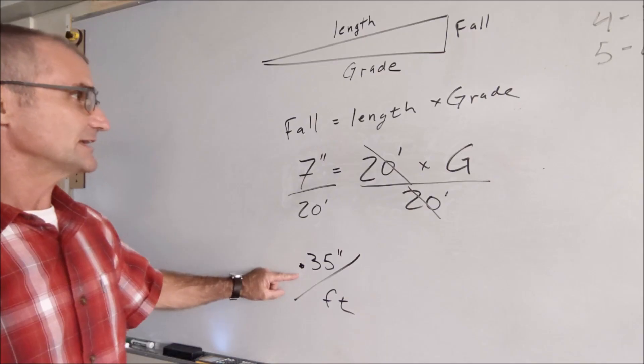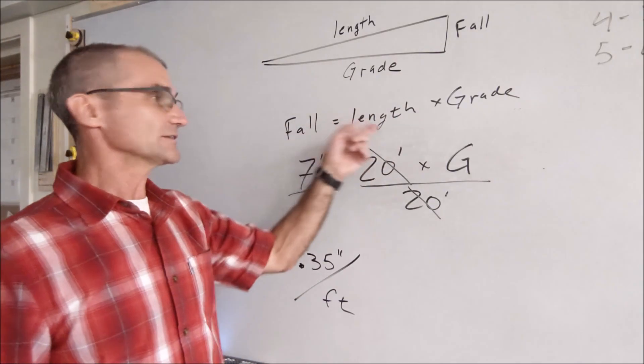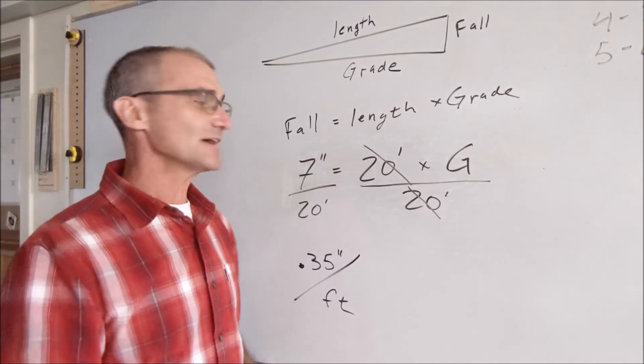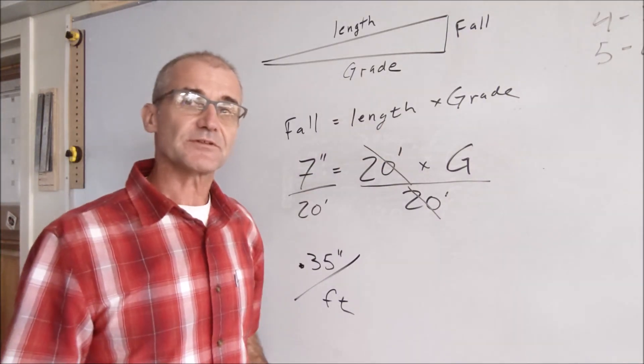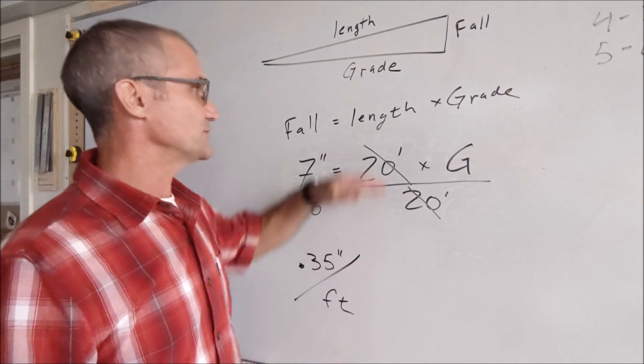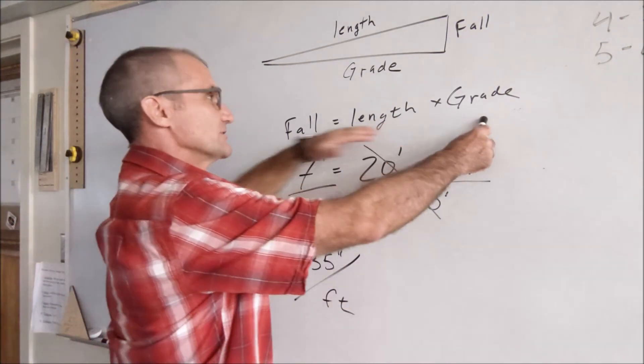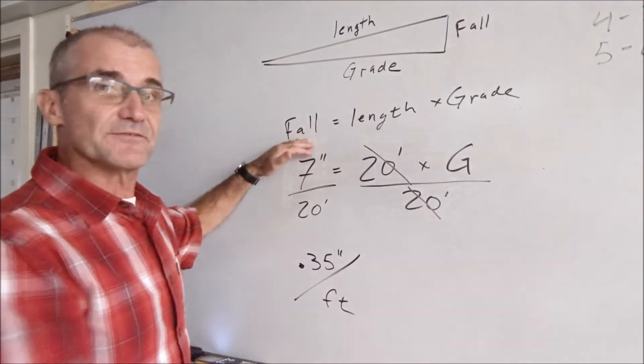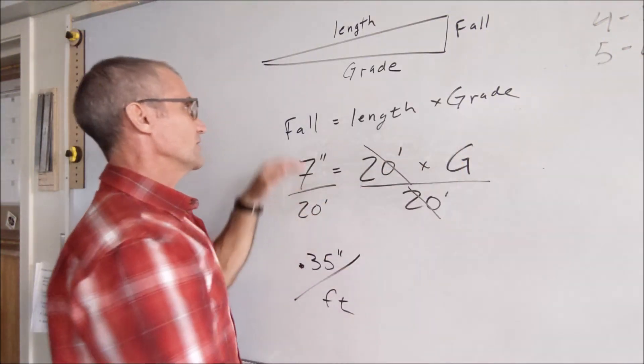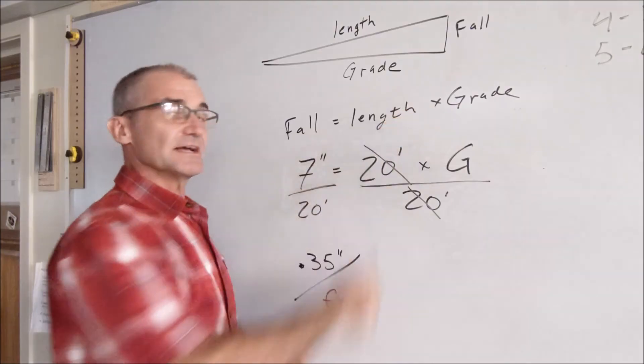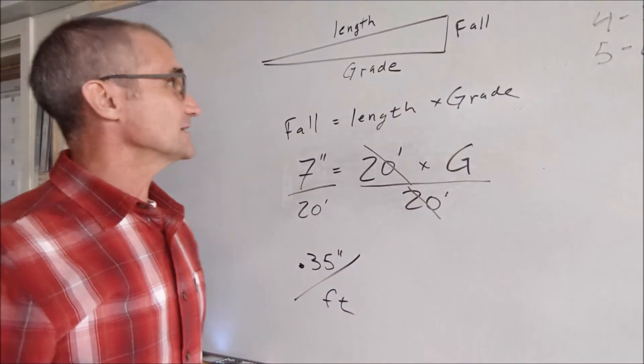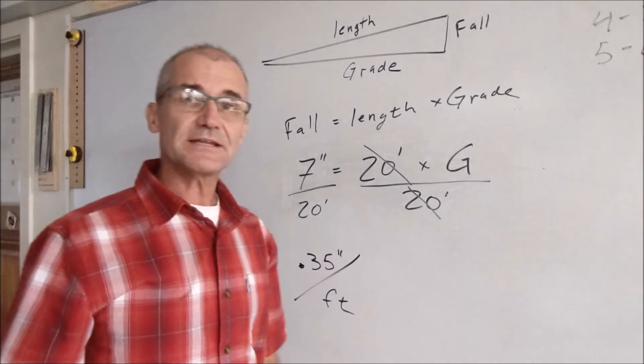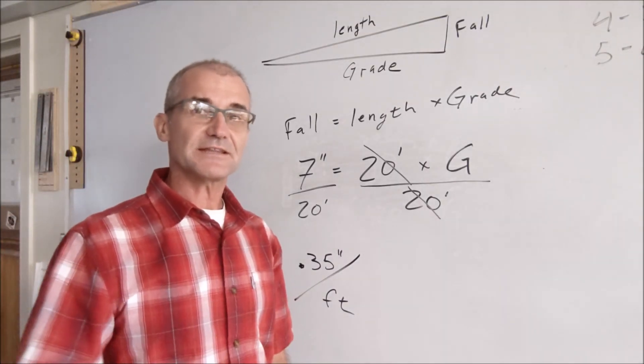So that's how you calculate grade given fall and length. Again, you need to have at least two of the variables to solve for the third variable. But if you have length and grade, you can find fall. Or if you have fall and length, you can find grade. Or if you have fall and grade, you can find the length you need. So just a quick overview on what grade is, calculating fall and length and grade,